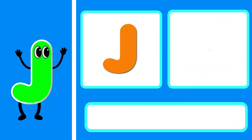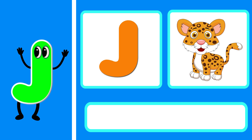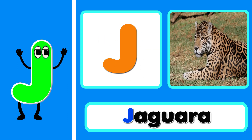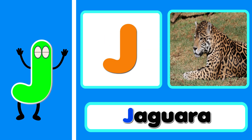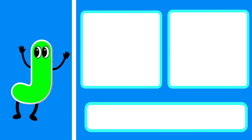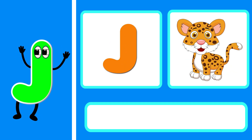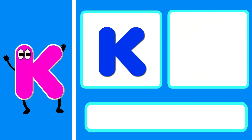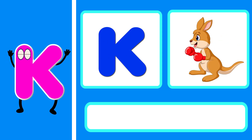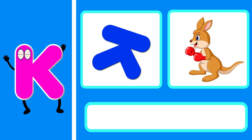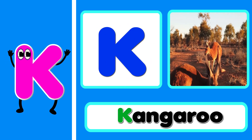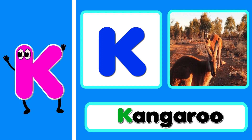J is for Jaguar. J, j. Jaguar. J is for Jaguar. J, j, j. K is for Kangaroo. K, k. Kangaroo. K is for Kangaroo. K, k, k.